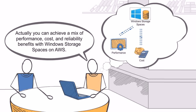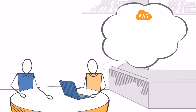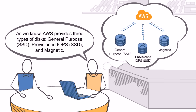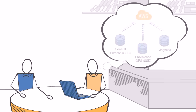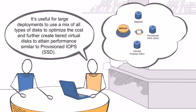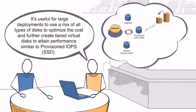As we know, AWS provides three types of disks: General Purpose SSD, Provisioned IOPS SSD, and Magnetic. It's useful for large deployments to use a mix of all types of disks to optimize cost, and further create tiered virtual disks to attain performance and much greater reliability for your data.